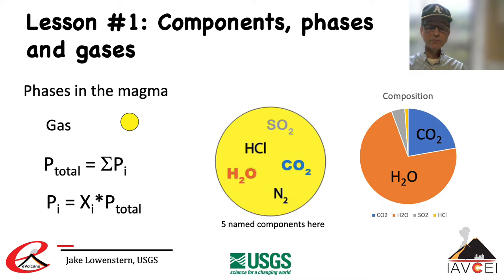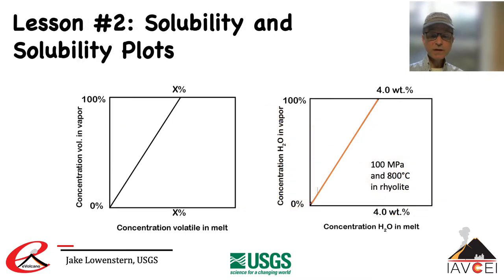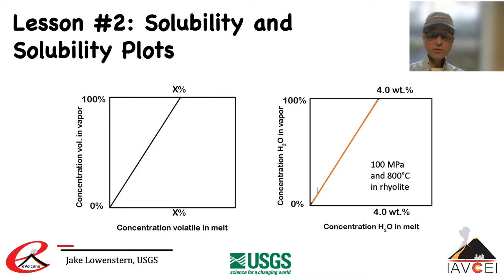The solubility of a volatile is the concentration of that component at the point of saturation with the phase of fixed composition for that component. In the left diagram, the concentration of the volatile in the melt increases until it reaches saturation at 100% of that volatile in the vapor phase. Its concentration in the melt at that time is x, the solubility limit. For water at 100 MPa — equivalent to 3.5 km depth — you can dissolve about 4 weight percent water in a rhyolitic melt at 800°C. If there's any more than that, you'll form bubbles of pure water or steam. So in this example, 4% is the solubility of water.